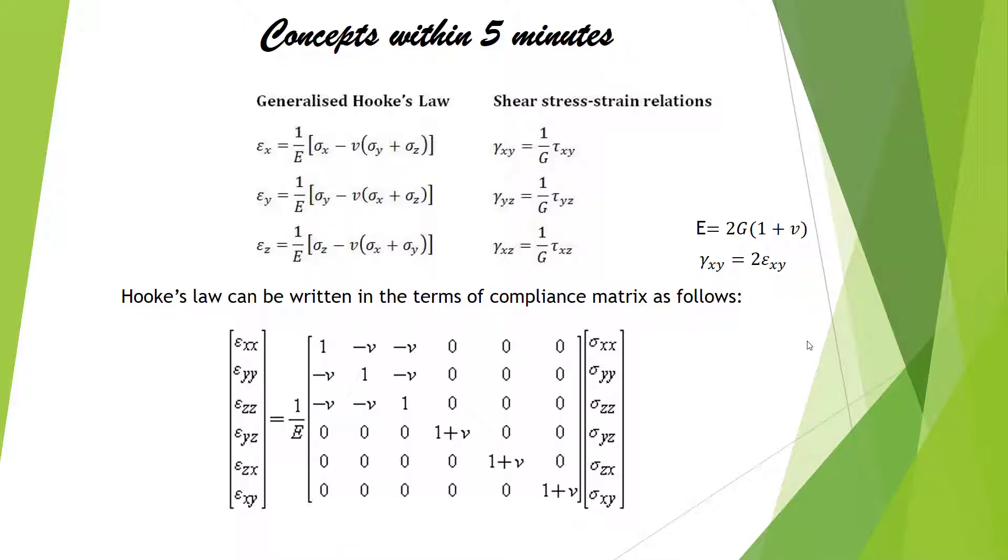This particular relation between Young's modulus and shear modulus as well as mu is also considered in this matrix. If you just replace G with E divided by 2 into 1 plus mu, you will get this particular matrix. I hope it is clear.